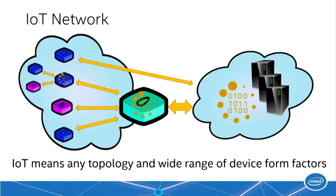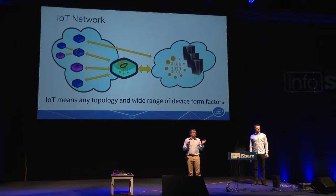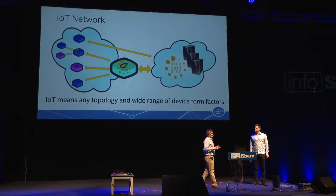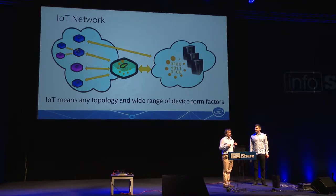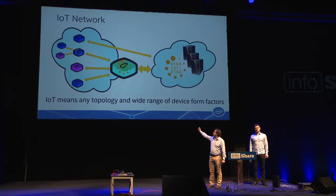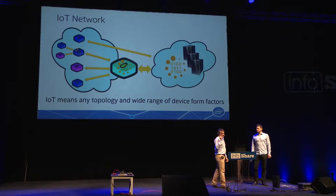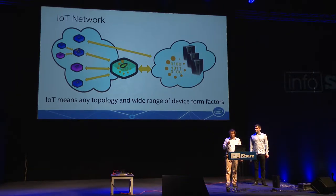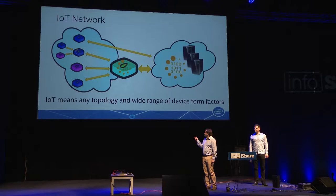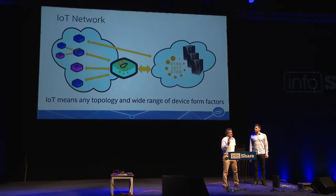Today, the IoT term is really popular, and this term might mean something different to everyone. So I'd like to level set what IoT means for us. For us, this is any kind of network of any topology — although you can see here on the screen a tree-like topology, but this is just a simple example. These devices which form an IoT network might be connected using many connectivity technologies. Some of them are connected directly to the internet, some are not, and in some situations the IoT network might be totally isolated from the internet.